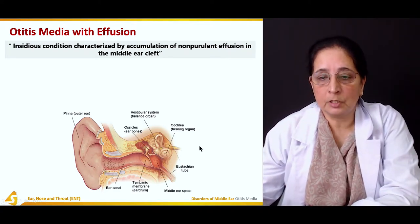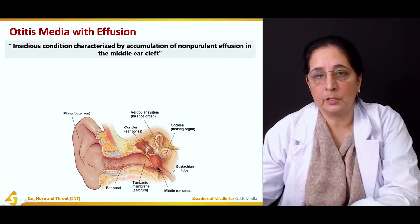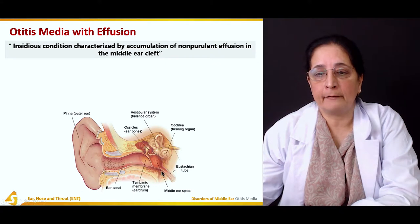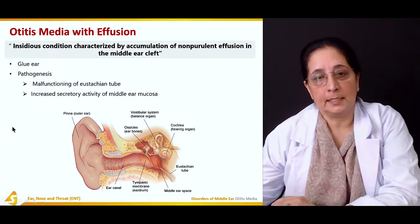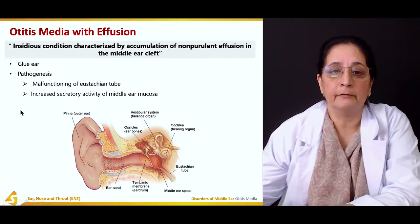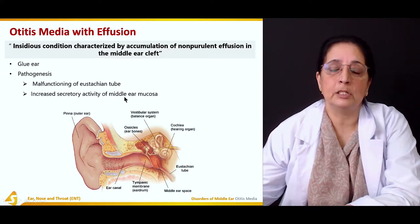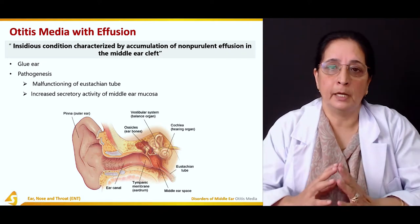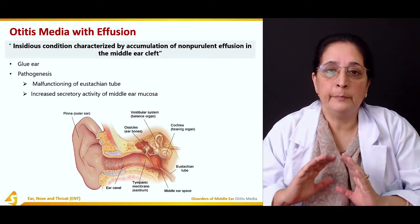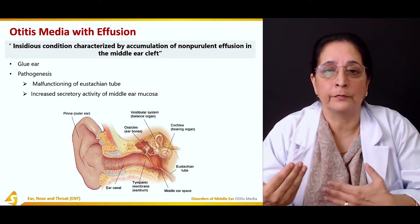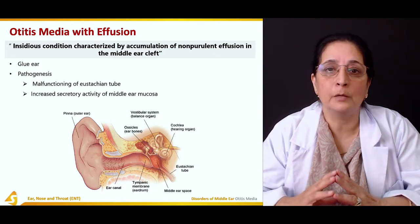The ear structures involved include the external auditory canal, tympanic membrane, eustachian tube, and middle ear space — so it is the presence of fluid in the middle ear cavity. It is also known as glue ear. The pathogenesis involves malfunctioning of the eustachian tube, or if there is increased secretory activity of the middle ear mucosa, such as the eustachian tube being blocked or not maintaining pressure, leading to middle ear effusion.